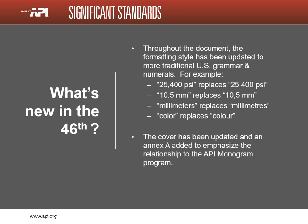There have been some very obvious changes to the 5L document. One change is a return to more traditional US grammar and numerals. For example, commas are again used in USC numbers as thousands separators — you will see 25,400 instead of 25,400. Decimal points are used instead of commas in SI decimal fractions — you will now see 10.5 millimeters instead of 10,5 millimeters. The spelling of some words is more traditional; you will notice 'color' spelled C-O-L-O-R instead of C-O-L-O-U-R and 'meter' spelled M-E-T-E-R not M-E-T-R-E.